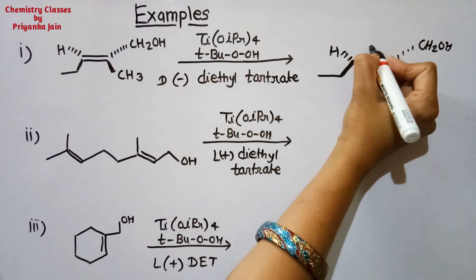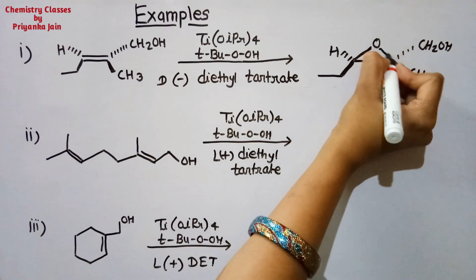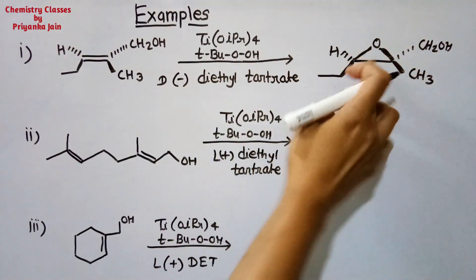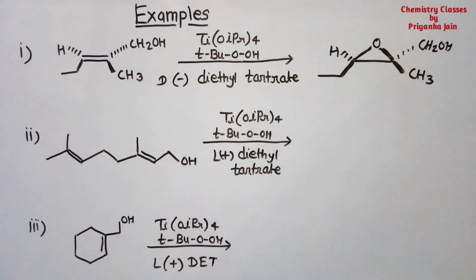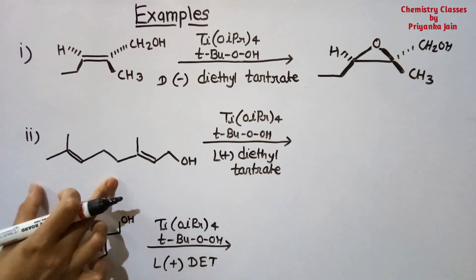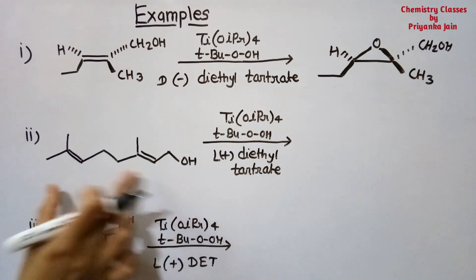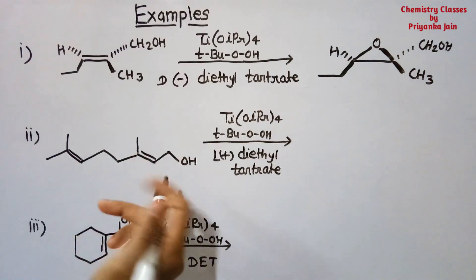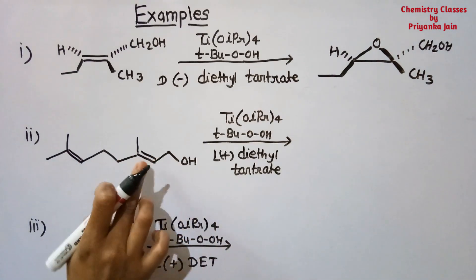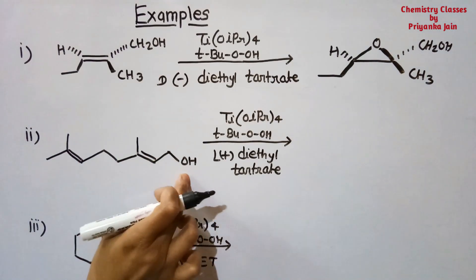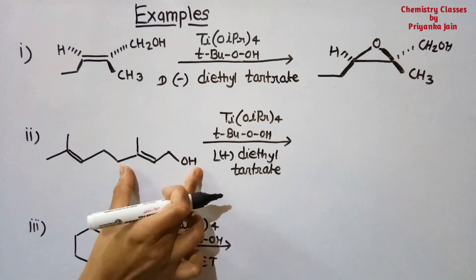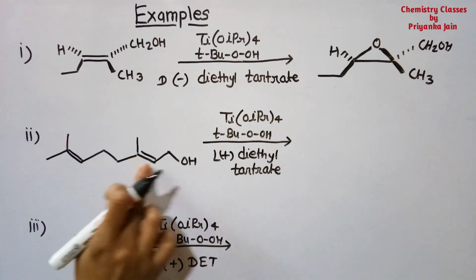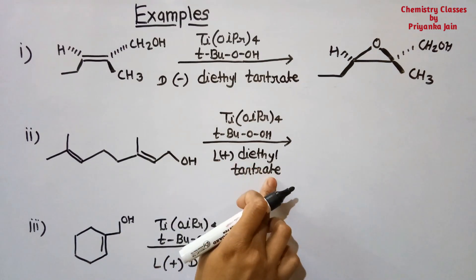The ring is formed above the plane. In the second example, we can see there are two double bonds present. Out of these two double bonds, only one is in the allylic position relative to the OH group, so only that double bond undergoes epoxidation. Here we have taken (+) diethyl tartrate.